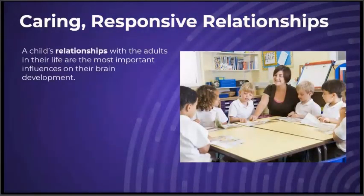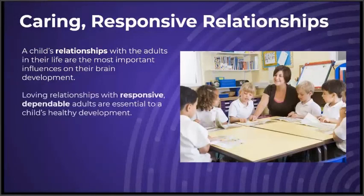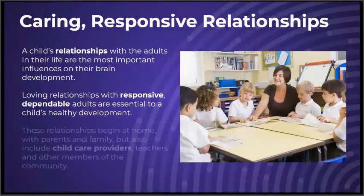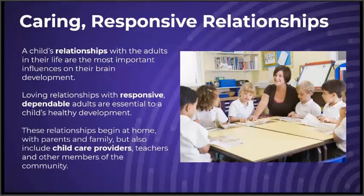A child's relationships with the adults in their life are the most important influences on their brain development. Loving relationships with responsive, dependable adults are essential to a child's healthy development. These relationships begin at home with parents and family, but also include childcare providers, teachers, and other members of the community.